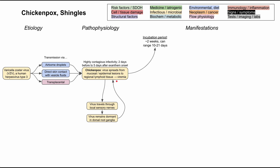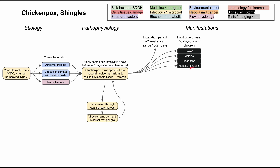Let's get into the manifestations of chickenpox. First, there's an incubation period after being infected, usually around two weeks long but ranging from 10 to 21 days. Then there's a prodrome period, usually lasting two to three days, which tends to be rare in young children but more common in young adults and older adults. During the prodrome phase, you'll have non-specific viral symptoms: fever, malaise, headache, and muscle and joint pain.